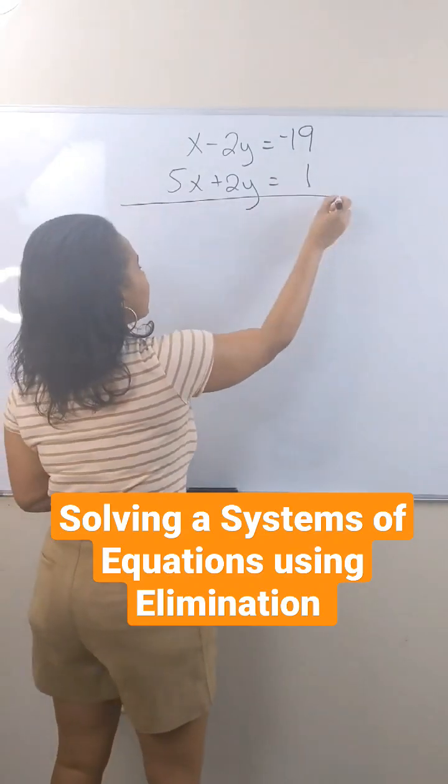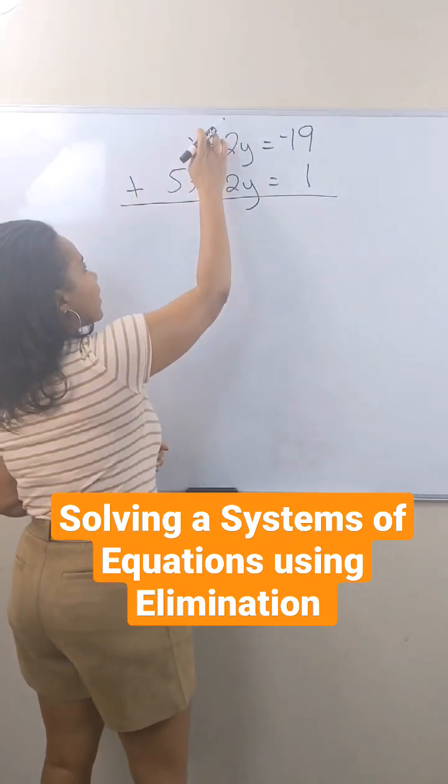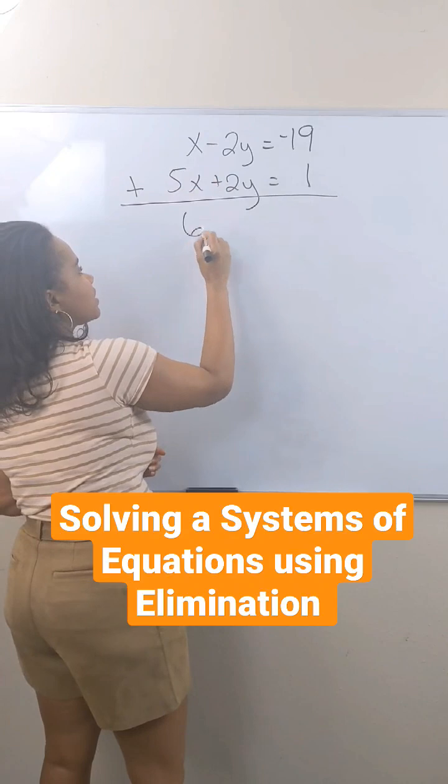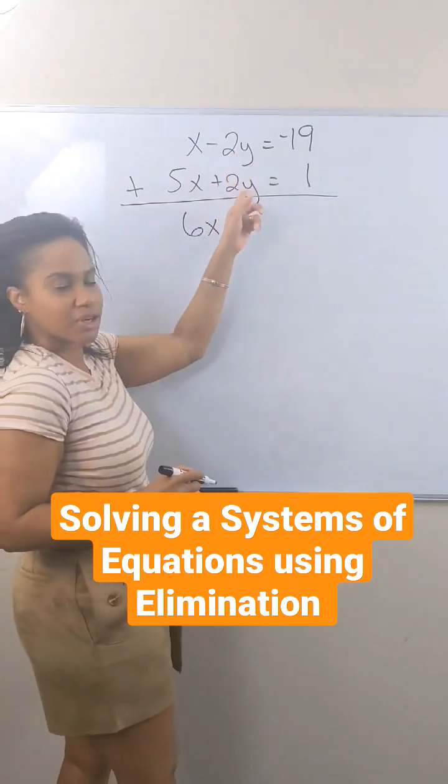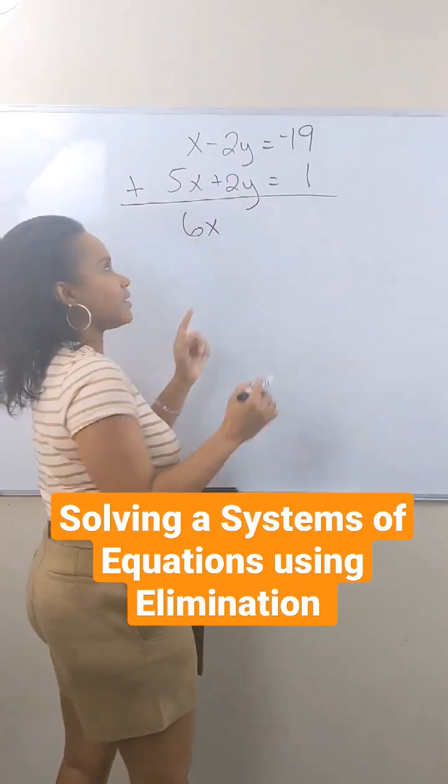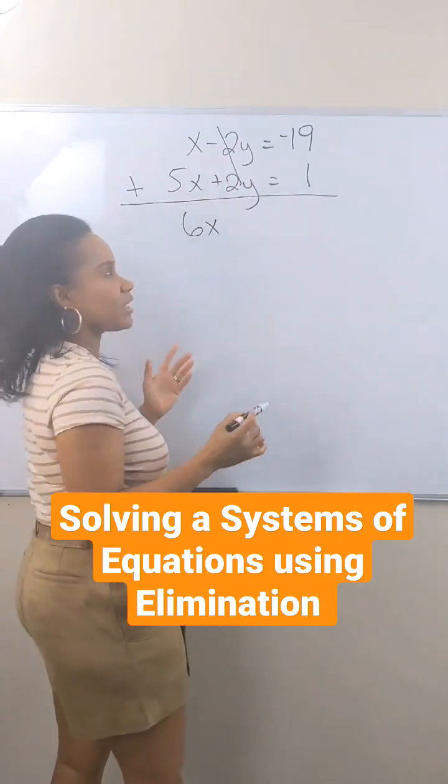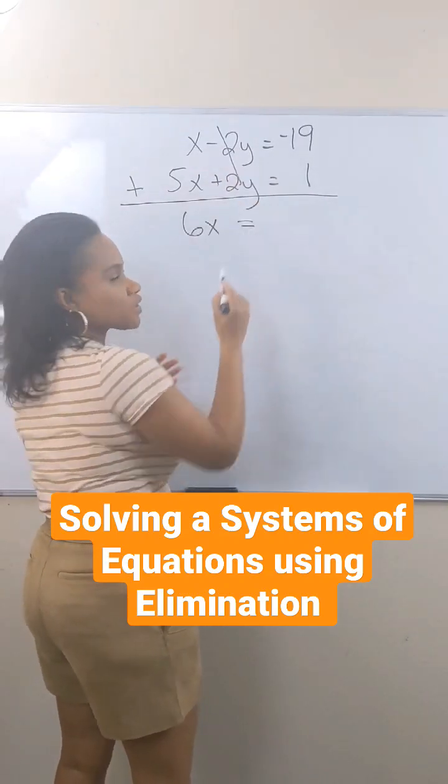So I want to add this system vertically. 5x plus 5x is 6x. And since I have opposite coefficients, that is eliminated because that is just 0. So I've eliminated my y value here, which is what I want.